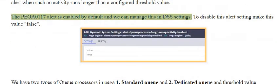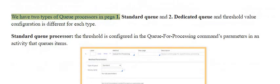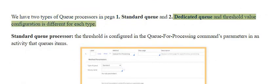The PEGA0117 alert is enabled by default and we can manage this in DSS settings. To disable this alert, set the value to false. We have two types of queue processors in Pega: standard queue and dedicated queue, and the threshold value configuration is different for each type.